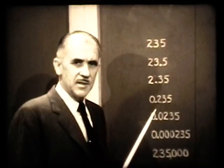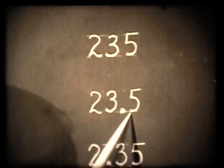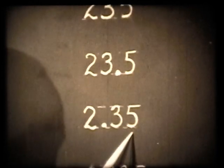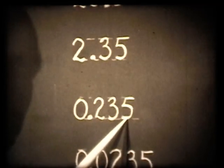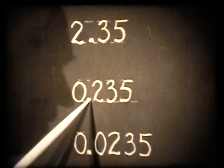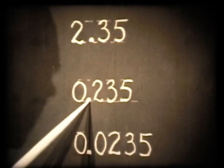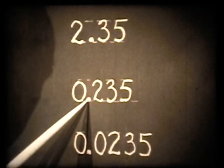The first set of numbers involve three significant figures. Here is 235 — there are three figures. Here is 23.5, this is three significant figures. 2.35 or .235 — the decimal point has just been moved over 1, 2, 3, and so on. All of these involve three significant figures.